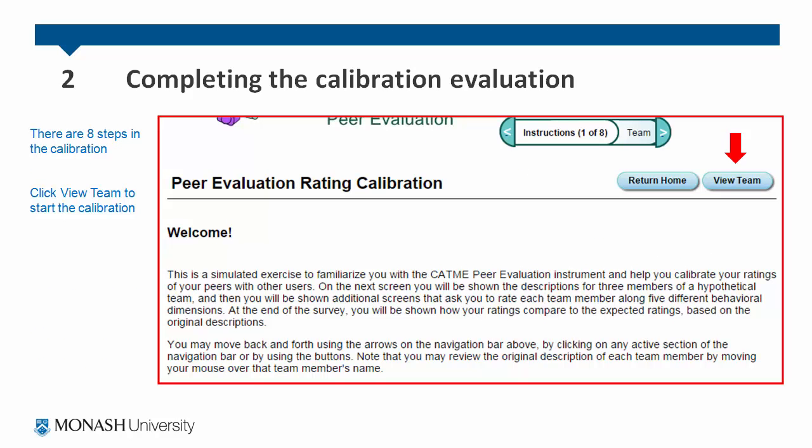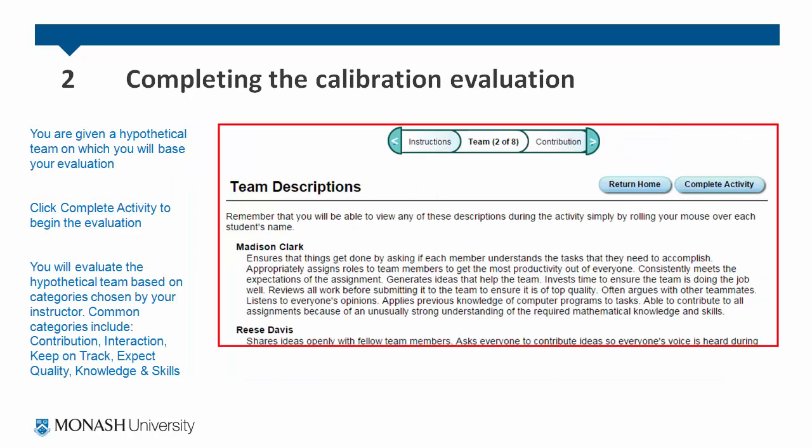There are eight steps in the calibration. Click 'View Team' to start the calibration. You are given a hypothetical team on which you will base your evaluation. Click 'Complete Activity' to begin.